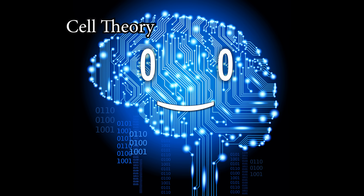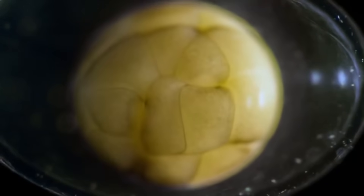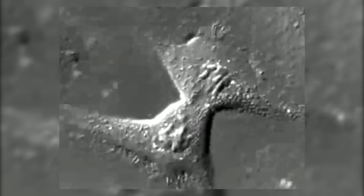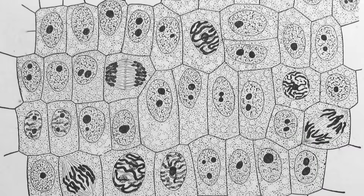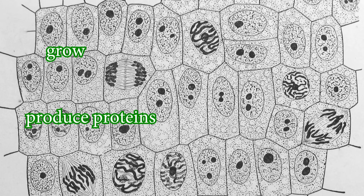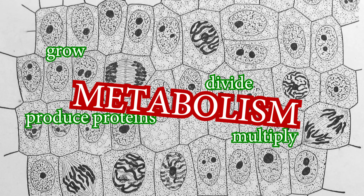The cell theory implies that all living things are composed of cells, and that all cells arise through cell division. These little building blocks are able to grow, produce proteins, divide, multiply, and other cool stuff thanks to metabolism.